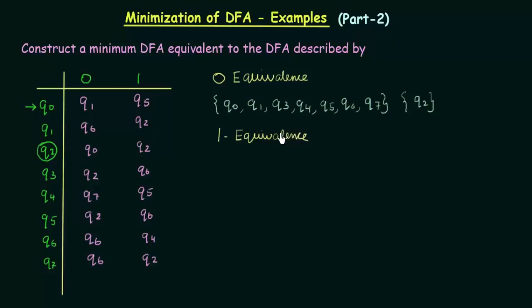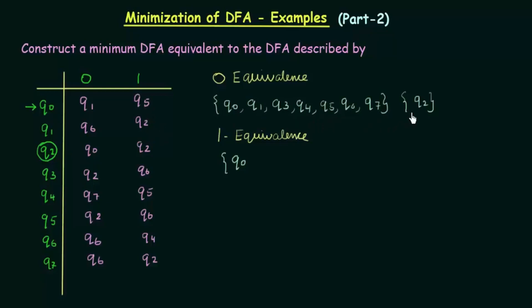For writing the 1-equivalence, you have to use the row of 0-equivalence and check if the states in the same set are 1-equivalent to each other or not. You take two states and check where they go on getting inputs 0 and 1. If they go to states contained in the same set, then they are 1-equivalent; otherwise they are not. Let me check Q0 and Q1. On getting input 0 they go to Q1 and Q6 — both fall in the same set, so that is fine. On getting input 1 they go to Q5 and Q2. Q5 is in this set but Q2 is in another set, so Q0 and Q1 cannot be 1-equivalent. I will make a separate set for Q1.